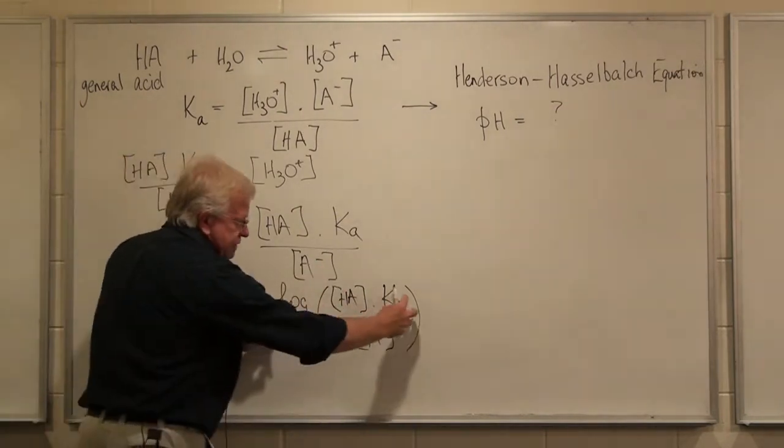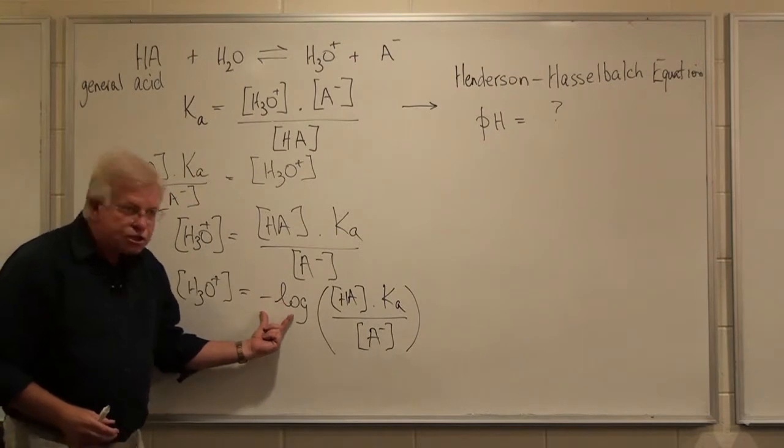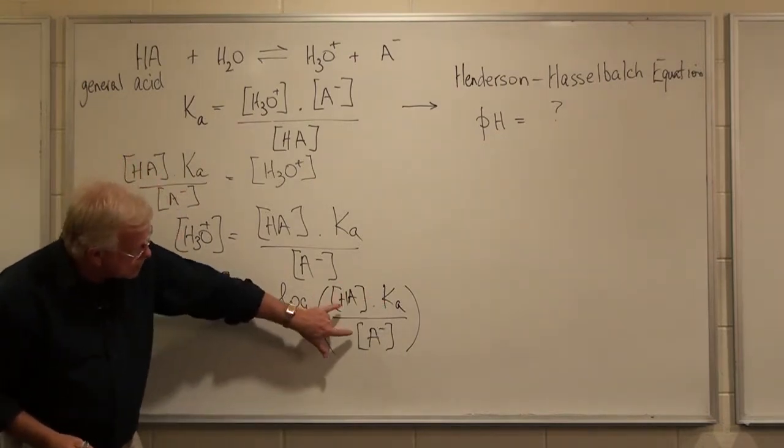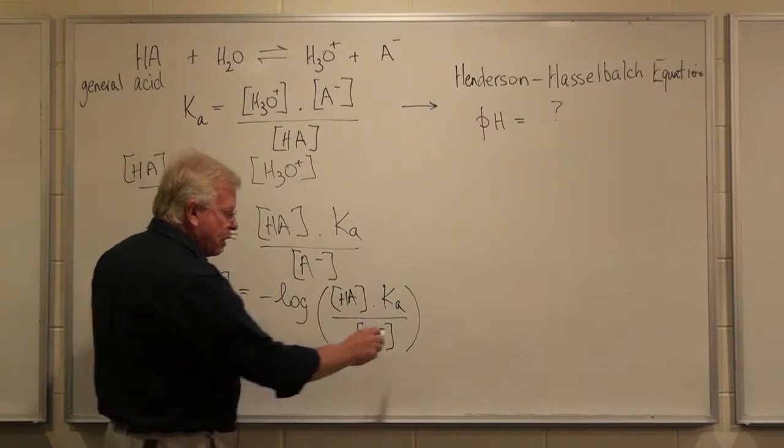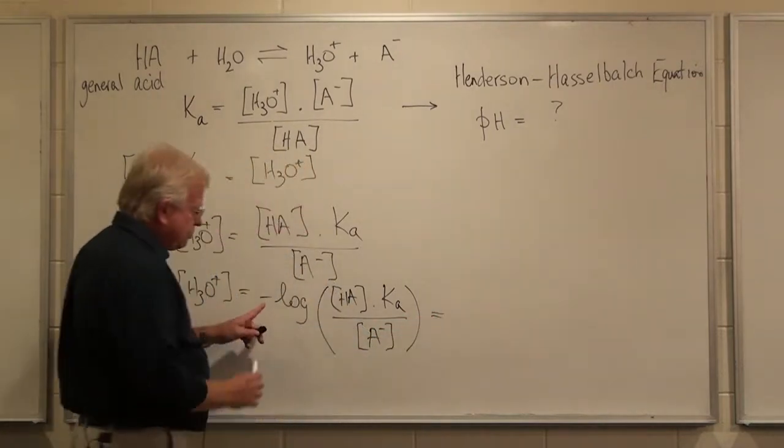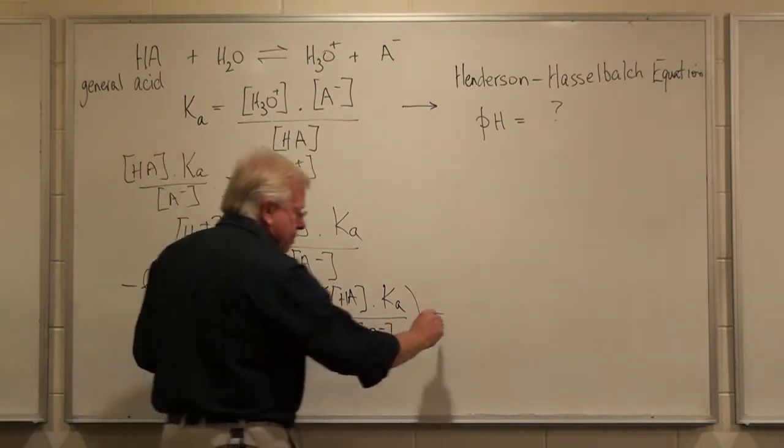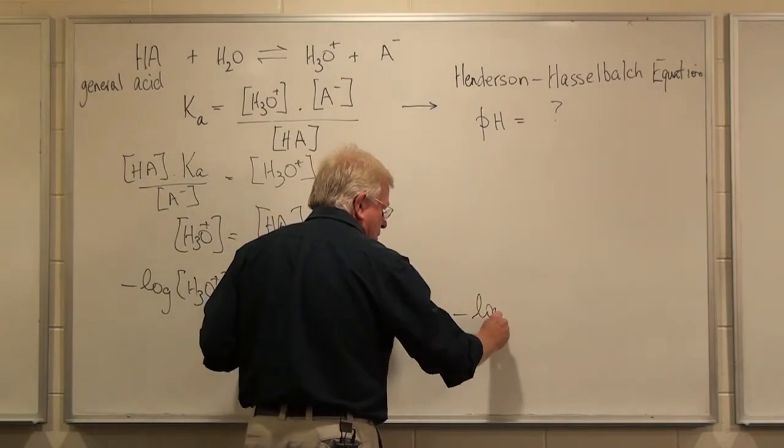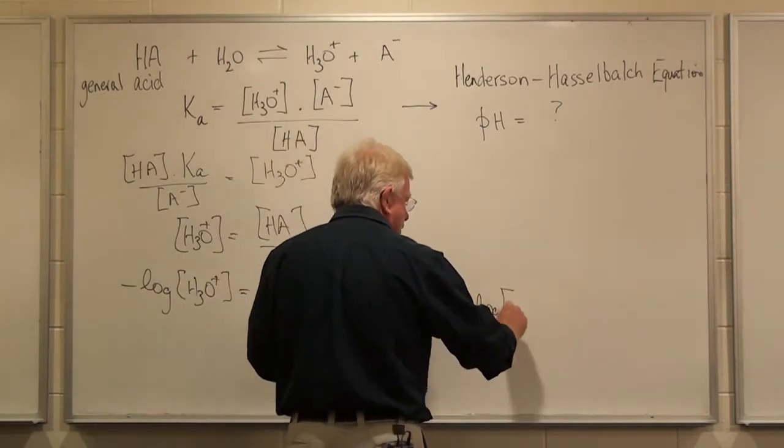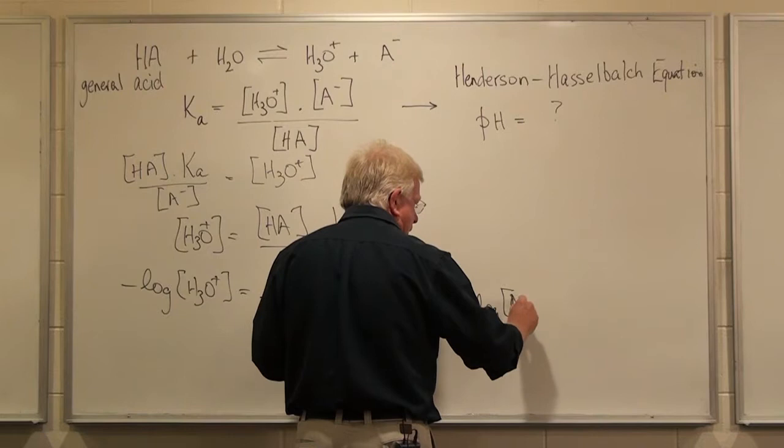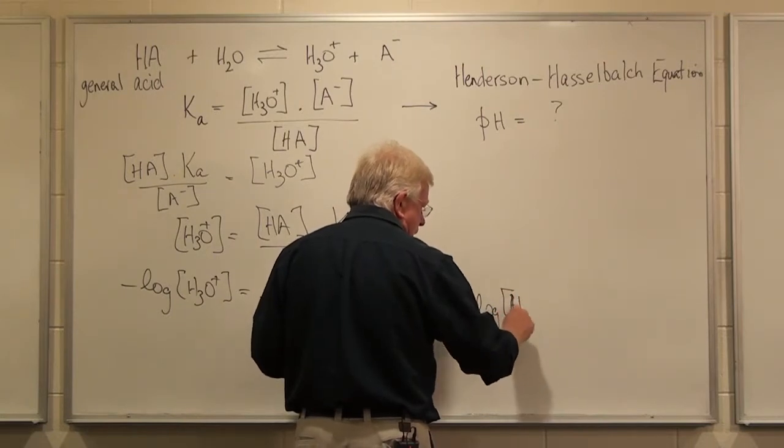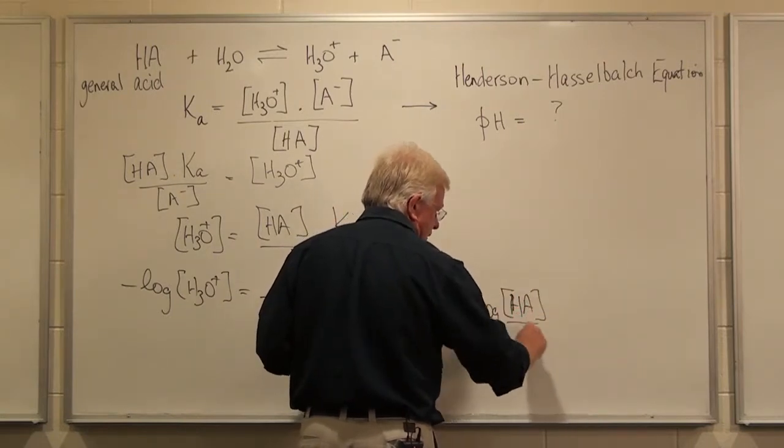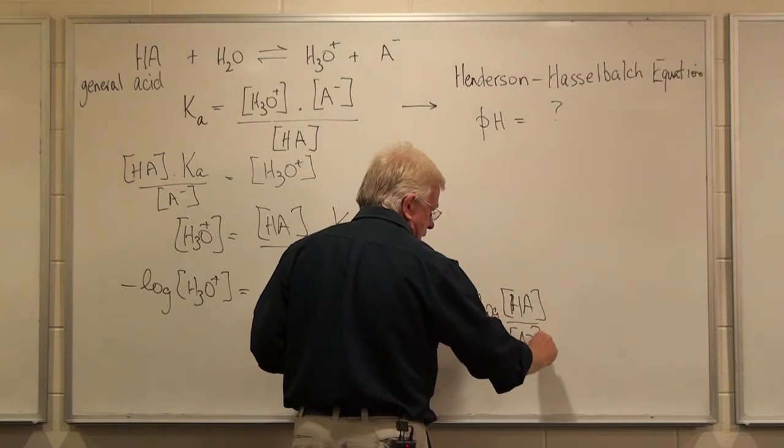Now, let me open this up. When you take minus the log of a fraction, I want to actually split these two up. I'll show you why in a minute. But that's equal to minus the log of [HA] over [A-].